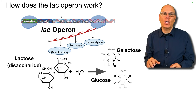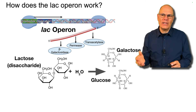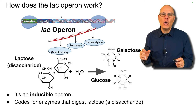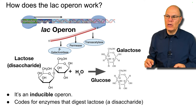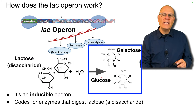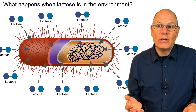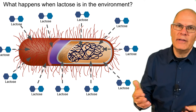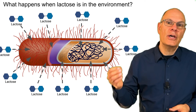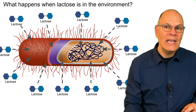How does the lac operon work? The lac operon is an inducible operon, as opposed to trp which was a repressible one. It codes for enzymes that digest lactose, a disaccharide. Lactose is composed of two sugar monomers, and the enzymes that digest it break it down into glucose and galactose. If you had E. coli in your gut and drank a glass of milk, the lactose would be in E. coli's environment and would diffuse into the cell.